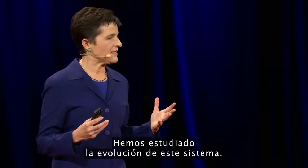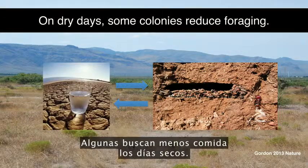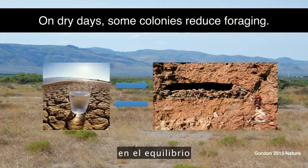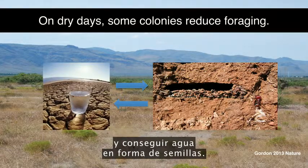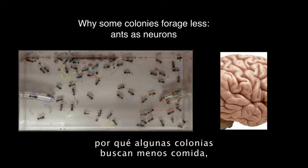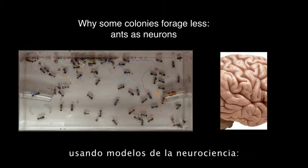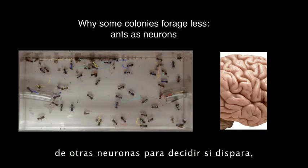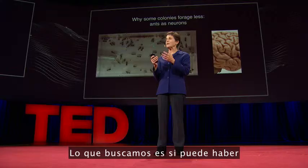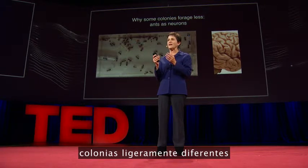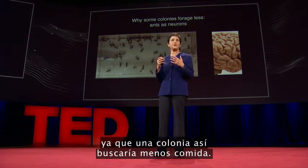We've been studying the evolution of this system. There's variation: colonies are different. On dry days, some colonies forage less, managing the trade-off between spending water to search for seeds and getting water back in the form of seeds. We're trying to understand this by thinking about ants as neurons, using models from neuroscience. Just as a neuron adds up its stimulation from other neurons to decide whether to fire, an ant adds up its stimulation from other ants to decide whether to forage. We're looking for small differences among colonies in how many interactions each ant needs before it's willing to go out.